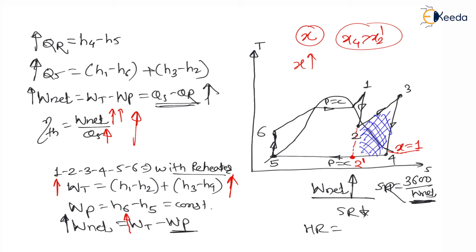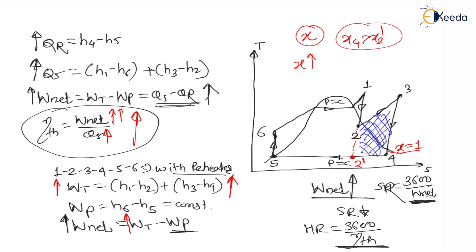Heat rate is 3600 / thermal efficiency. As thermal efficiency is increasing, heat rate is also decreasing. So in the case of reheat cycle, efficiency of the cycle is always increasing. In the Brayton cycle, we saw that because of reheat alone efficiency decreases — only reheat with regeneration increased efficiency for the Brayton cycle. But for the Rankine cycle, with reheat only, efficiency is increasing.